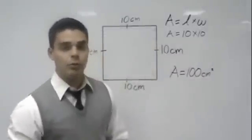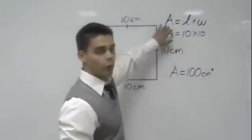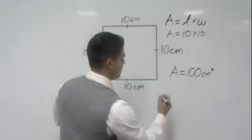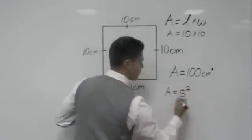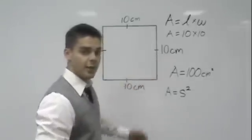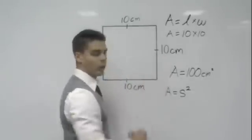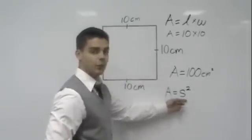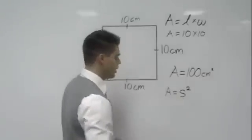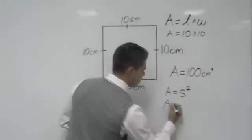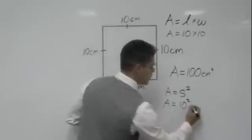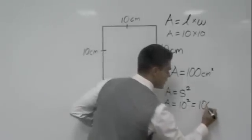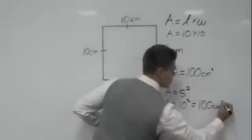Now you may also see this formula for a square written as A equals S squared. Notice since it's a square, the sides are the same, so you can just square one of the sides. S stands for side. So it would be one side squared, which would be the same as 10 squared, which equals 100 centimeters squared.